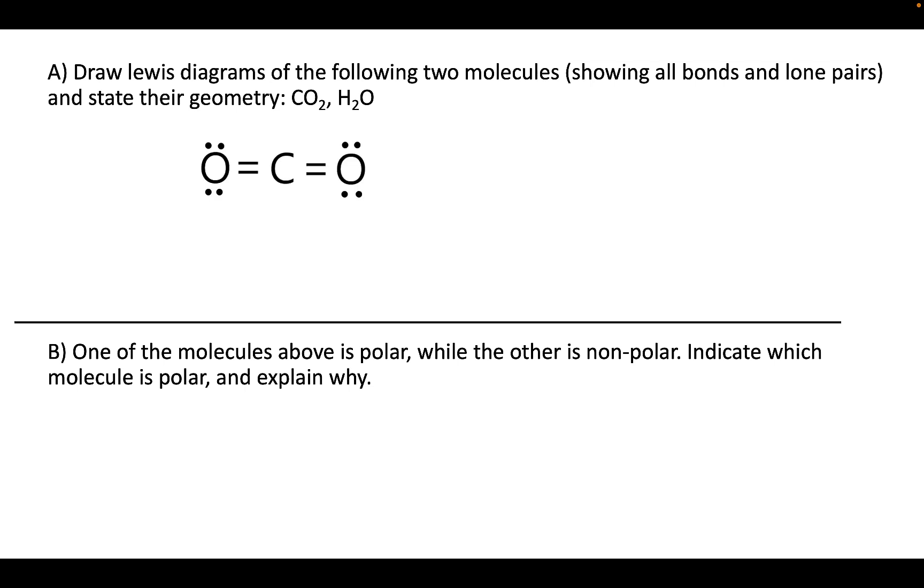For carbon dioxide we have the following. Remember that carbon generally likes to make four bonds, oxygen likes to make two, and that leads us to this structure which does have all the electrons placed and complete octets. That's something we should definitely expect for a molecule that's as stable and common as carbon dioxide.